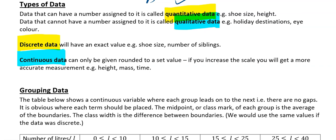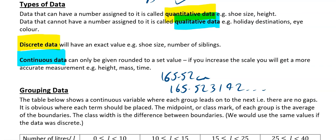And then the last one is continuous data. The way I remember continuous data is data which has to be measured — things such as height. Say you measure somebody's height and you think you've measured quite accurately, you've said they are 165.52 centimetres. You could have gone a bit further — 165.523192 and so on. So data that has to be measured and at some stage has been rounded. If you can measure something and you potentially could have measured it more accurately, then you're looking at continuous data.